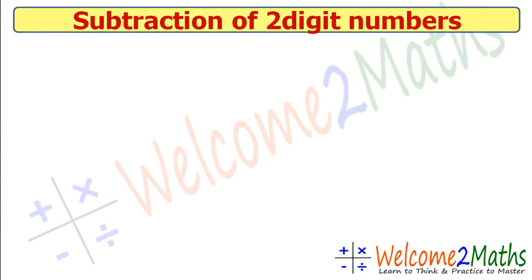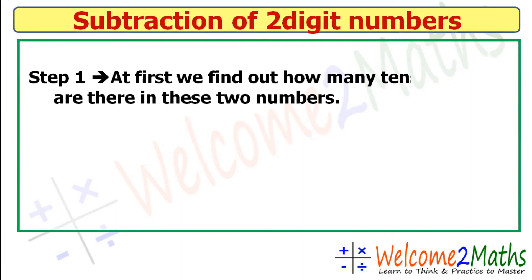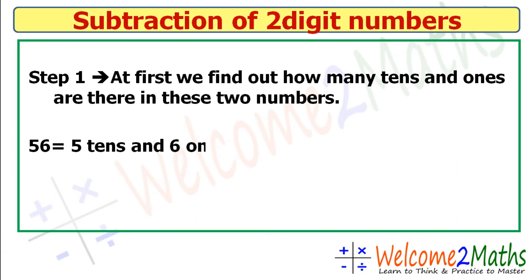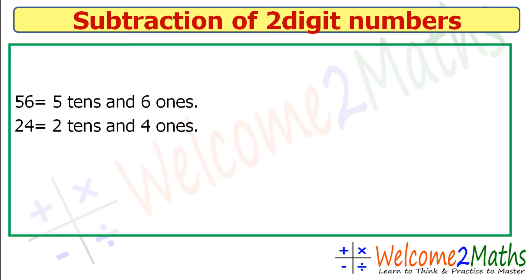Now let's see the subtraction process step by step. Step number one: first we find out how many tens and how many ones are in these two numbers. In the number 56 there are five tens and six ones. In the number 24 there are two tens and four ones.